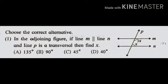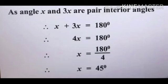First sum. Here line M is parallel to line N and line P is a transversal. We have to find the value of X. Now here 3X and X form interior angles. So according to the property of interior angles,